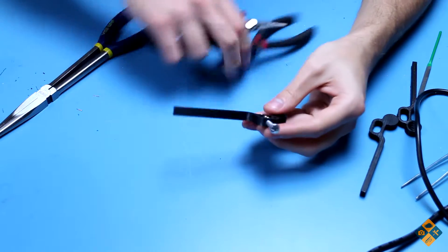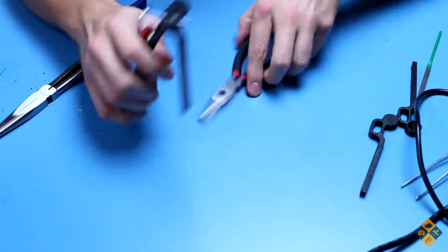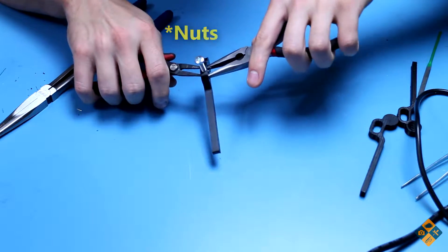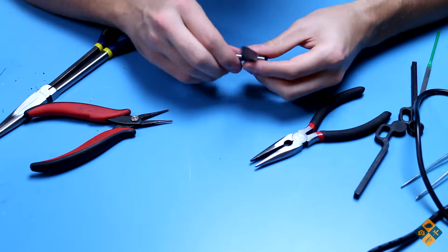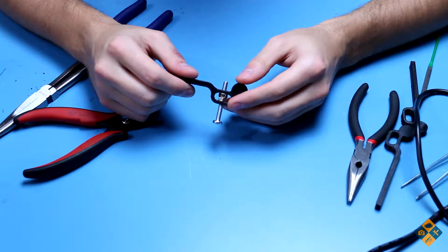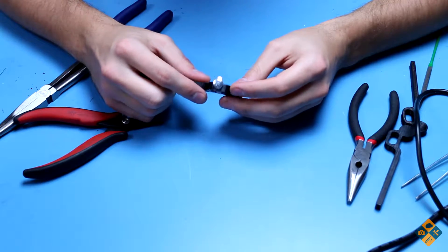Now take two sets of pliers, needle nose preferably, and tighten the screws into each other. This will hold the nuts together so the object will spin freely. Now that I've shown you how to set up the tool, let's go ahead and cut to it in action.